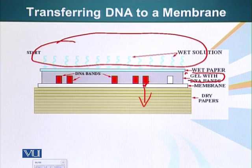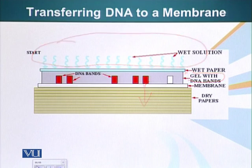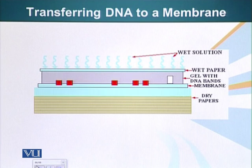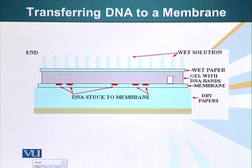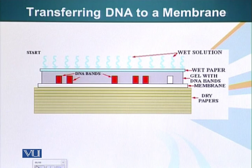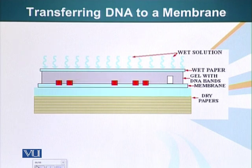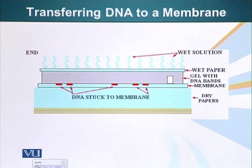So now we have DNA stuck to a membrane, and we fix this DNA to make sure it stays stuck through whatever we do next. As the liquid buffer moves through the gel, it takes the DNA along with it; since the DNA cannot go through the membrane, it gets stuck and is fixed there. Our objective, remember, is to see whether the restriction enzyme site has been deleted or mutated or not.